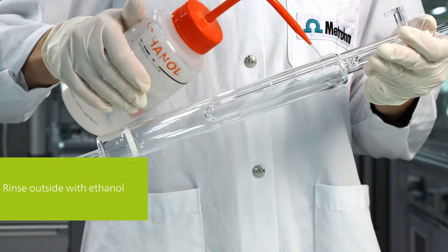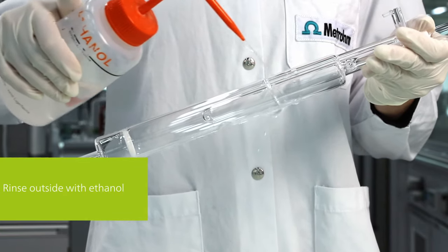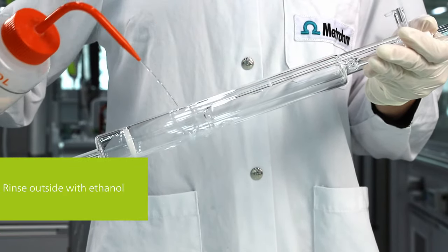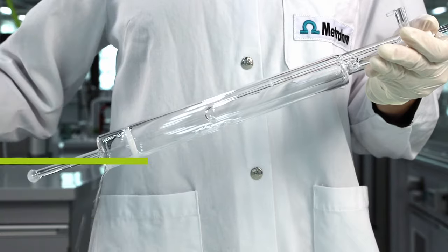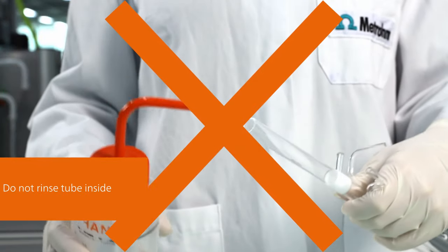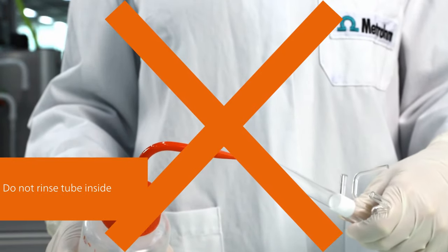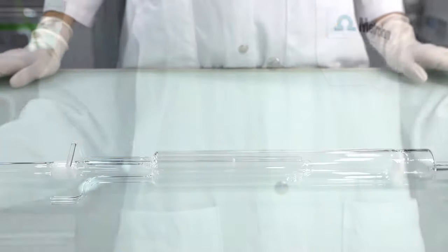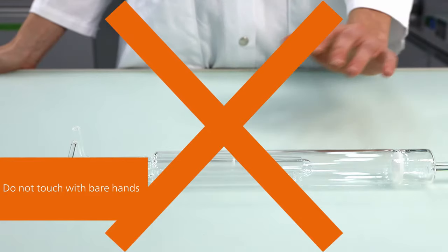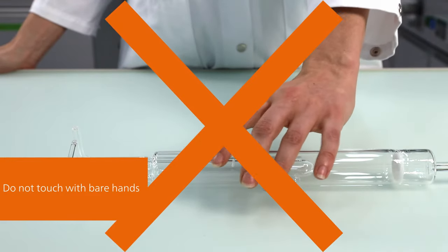Prepare the new combustion tube by cleaning it with ethanol on the outside. Be careful to never rinse the interior with any type of alcohol, as the frit inside the tube absorbs the liquid and is then likely to explode when heated up. When handling the new combustion tube, always wear gloves. Touching the combustion tube with your bare hands will contaminate the new tube.